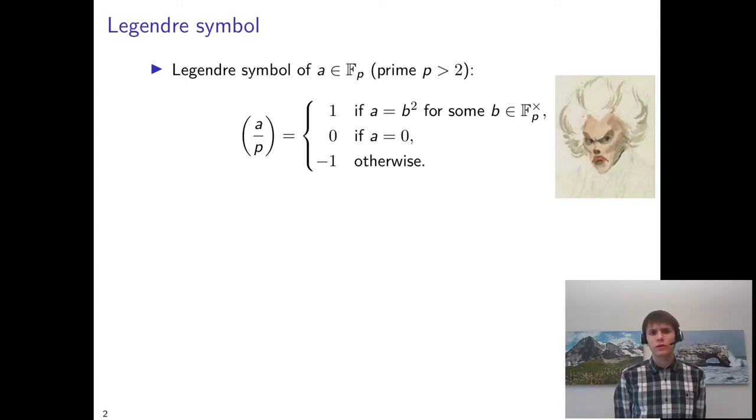The Legendre symbol of an element of a finite field is 0 if the element is 0, 1 if the element is a non-zero square, and minus 1 otherwise.